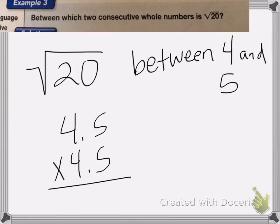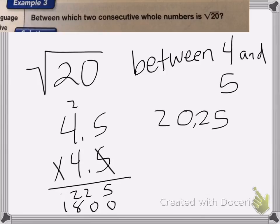5 times 5 is 25. Carrying my 2. 5 times 4 is 20 plus 2 is 22. 0. 4 times 5 is 20. Carrying my 2. 4 times 4 is 16, 17, 18. Add those up. So I get 5, 2, 20. Carrying my 1, 10, 20. In two decimal places. So 4.5 squared is not equal to 20. It's actually equal to 20.25.